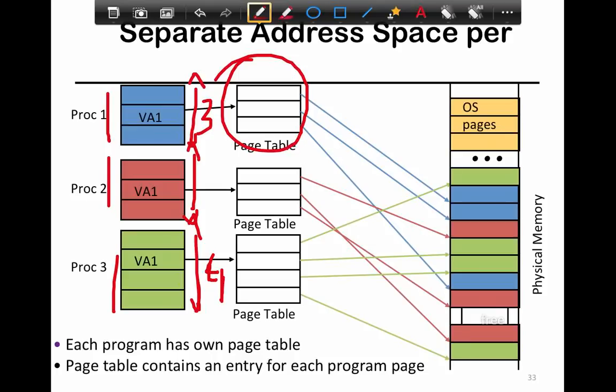Each of these page tables maps to a different part of the physical memory. You can see in this case the continuous chunks of green have been mapped to different chunks in actual physical memory.